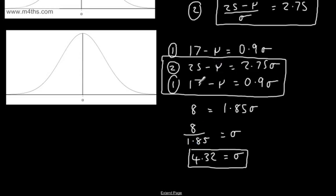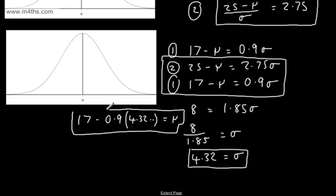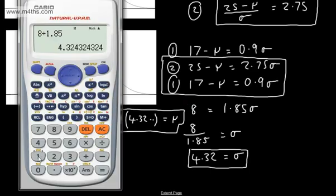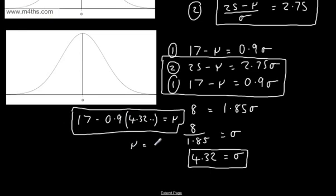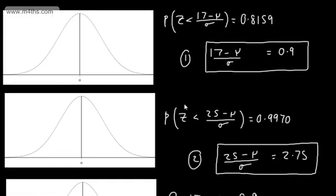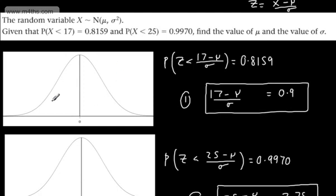Now I just need to find mu. Substituting sigma back into equation 1: mu equals 17 minus 0.9 multiplied by 4.32. In the calculator: 17 minus 0.9 times the stored answer gives mu = 13.1, correct to 3 significant figures. So all we've done is a simultaneous equation — this is really just number plugging, and I don't see a great need to use graphs in this particular case.